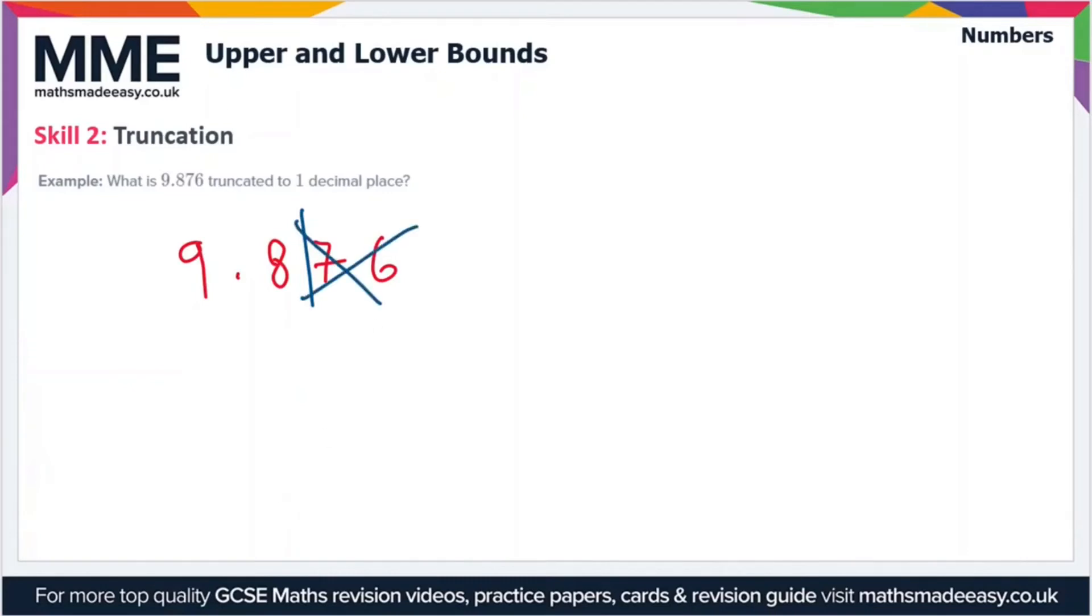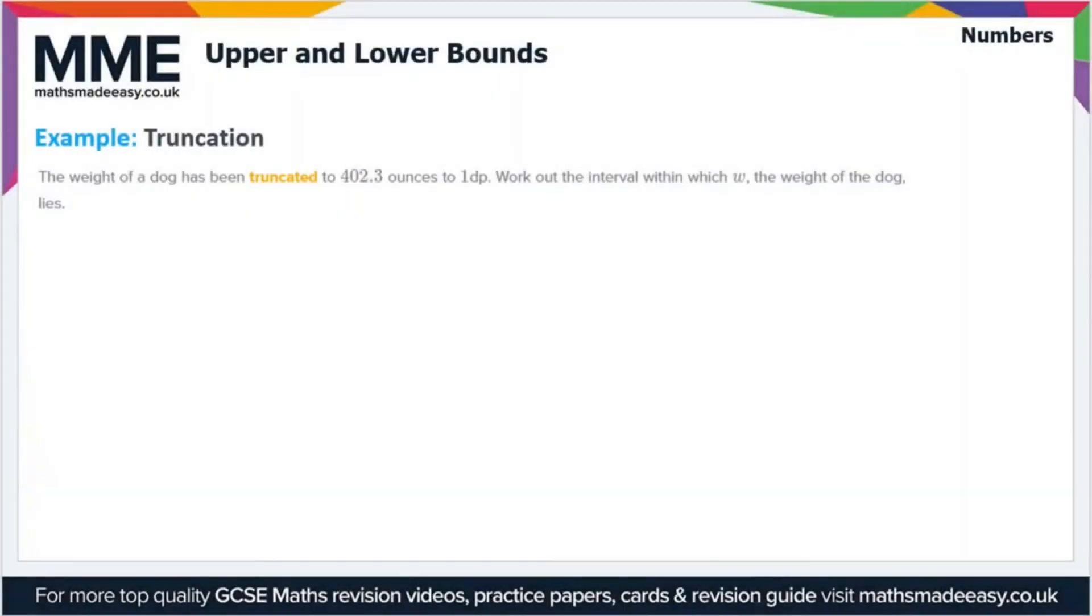Here we have an example about truncation. The weight of a dog has been truncated to 402.3 ounces to one decimal place, and we have to work out the interval within which w, the weight of the dog, lies.